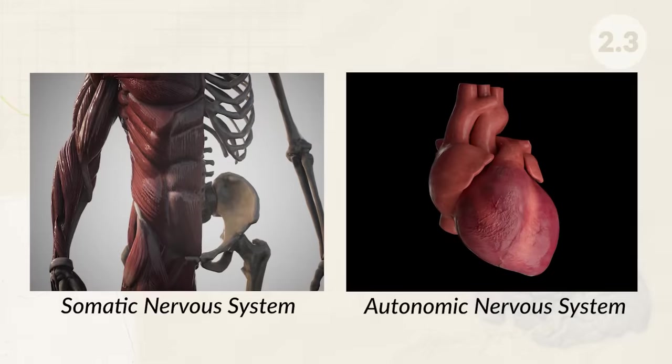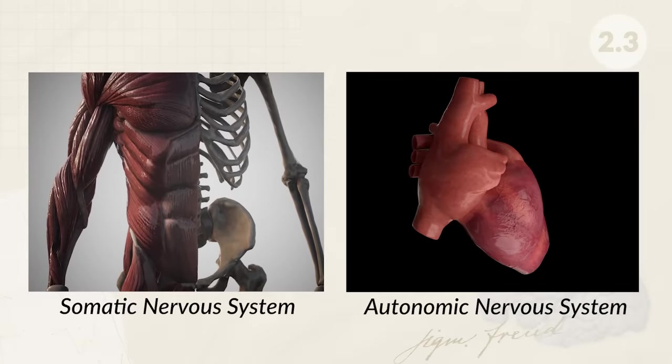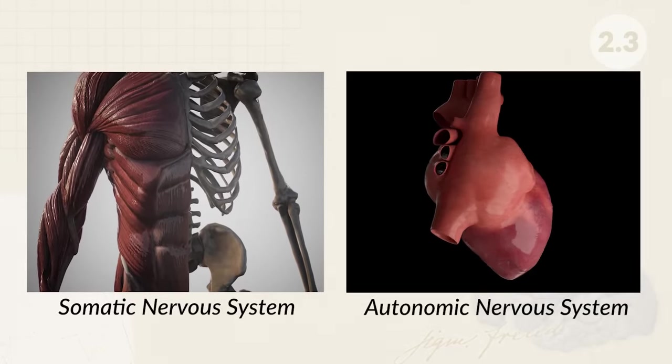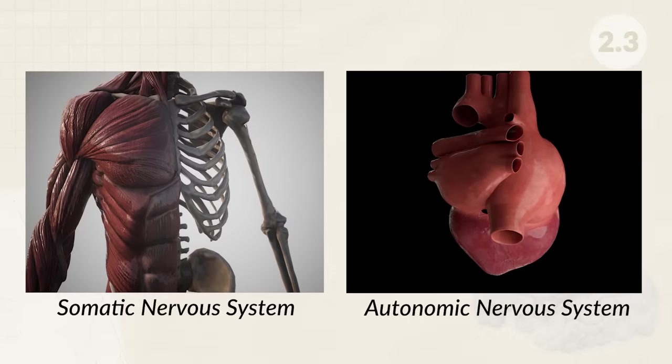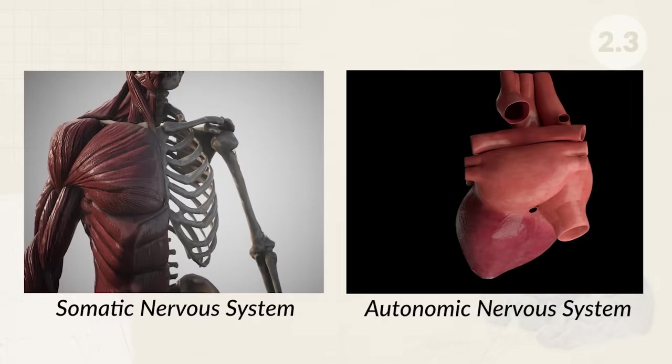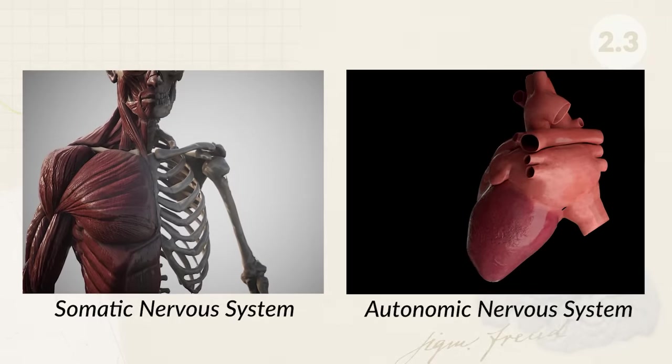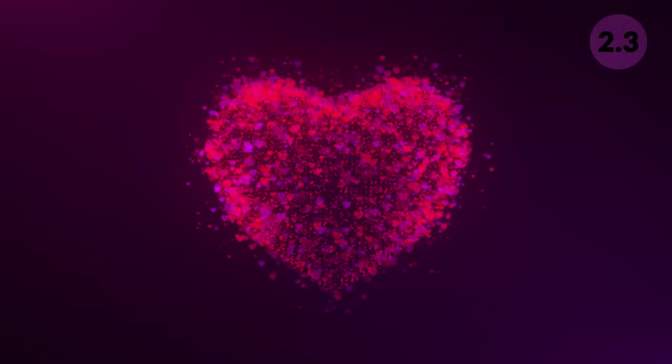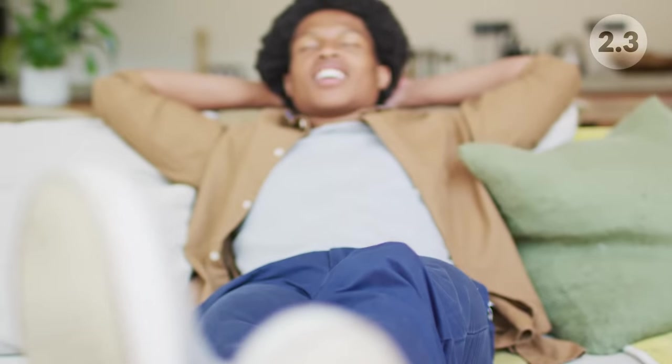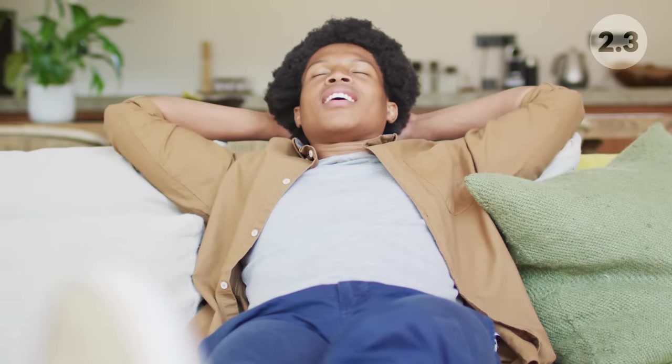The motor division includes the somatic and autonomic nervous systems. The somatic nervous system, also known as the skeletal nervous system, includes your five senses and skeletal muscle movements — these happen consciously and voluntarily. The autonomic nervous system controls involuntary activities, making sure your heart keeps beating, your stomach keeps digesting, and you keep breathing. The autonomic nervous system can be broken down into the sympathetic division, which mobilizes your body and gets it ready for action — making your heart beat faster, your eyes dilate, and increasing your breathing — and the parasympathetic division, which relaxes the body, slows your heart rate, increases digestion, and helps you store energy.